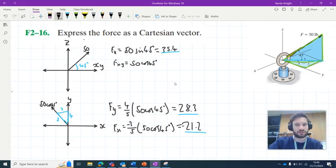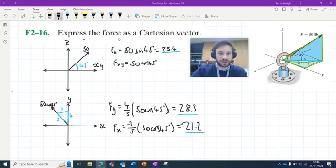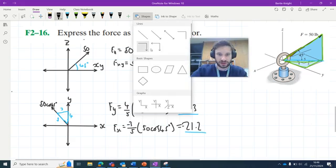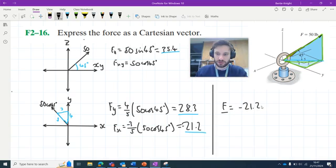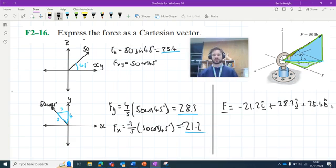Okay, so we have our x, y, and z components now. The question is asking, express the force as a Cartesian vector. So let's go ahead and do that. We can use i, j, and k notation here. We can say vector F is equal to minus 21.2i plus 28.3j plus 35.4k. Okay, and there's the solution to our problem.